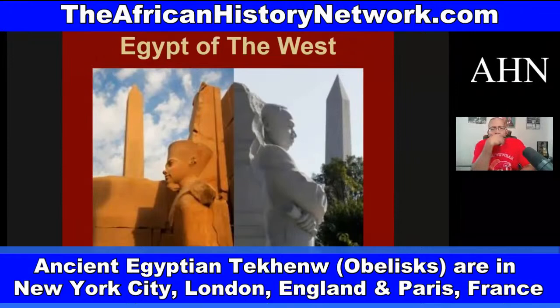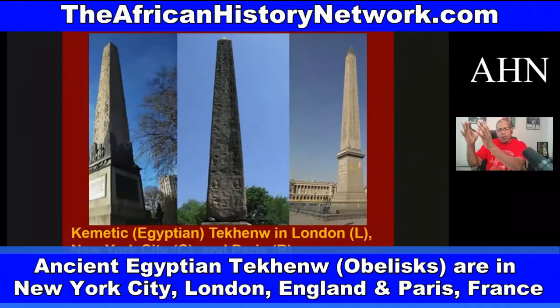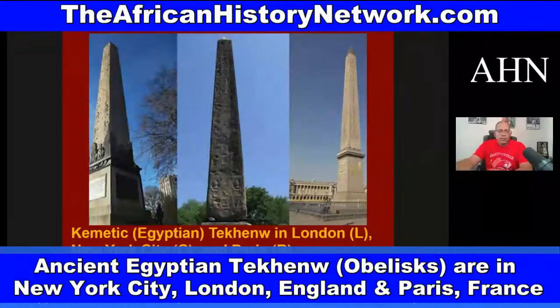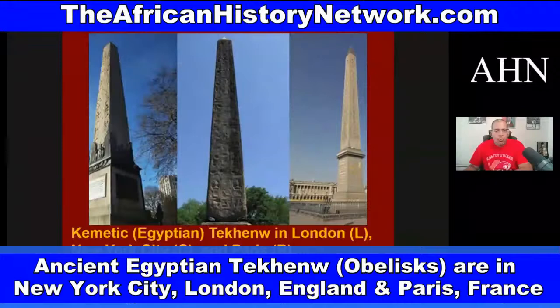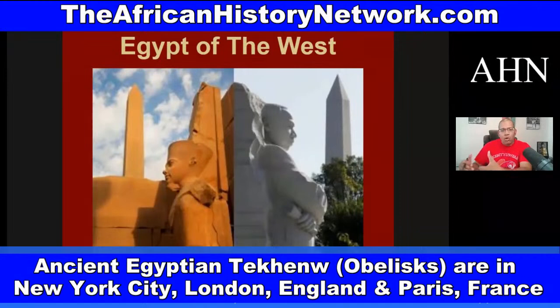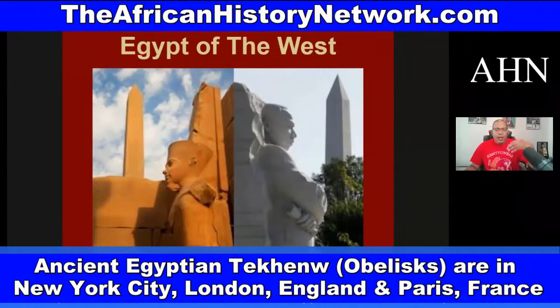This land was also called 'Egypt of the West,' especially by the Founding Fathers. When you look at Freemasonry, we know it deals with the teachings that the African Moors were custodians of — teachings that came from the Nile Valley region of Africa. The Moors took this information into Europe and taught it to Europeans, and it's this information that brought Europe out of the Dark Ages. One prominent symbol of Africa — from the mythology of Asar, Aset, and Heru — is the Washington Monument, which in ancient times was called a Tekhenu, a symbol of resurrection from Ancient Kemet.